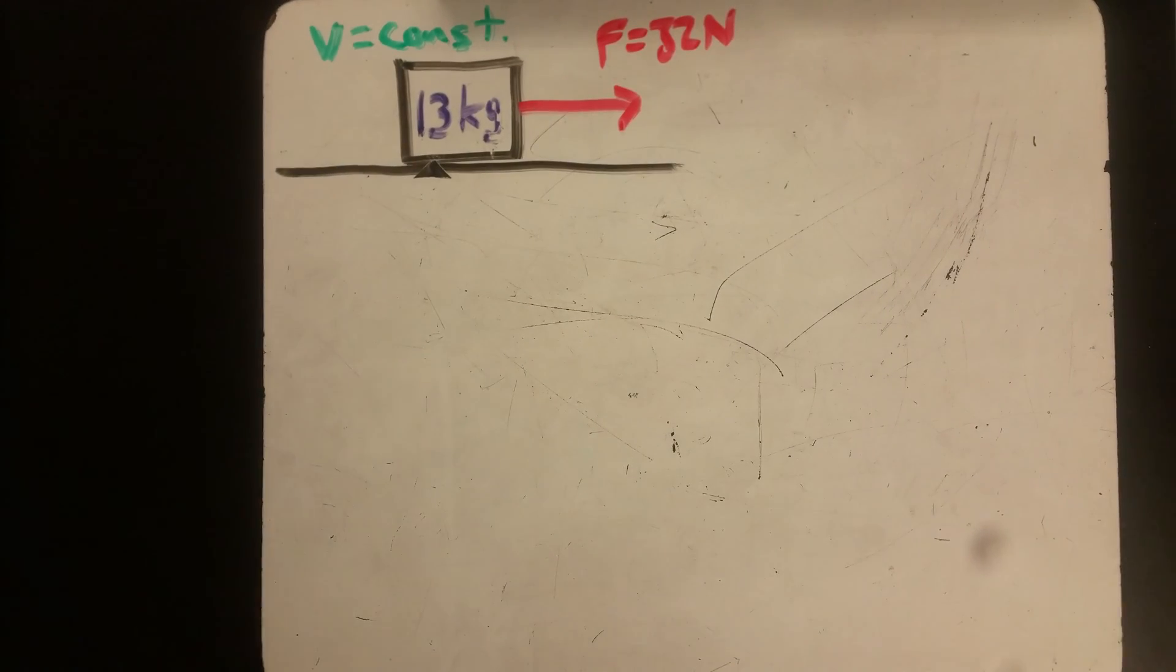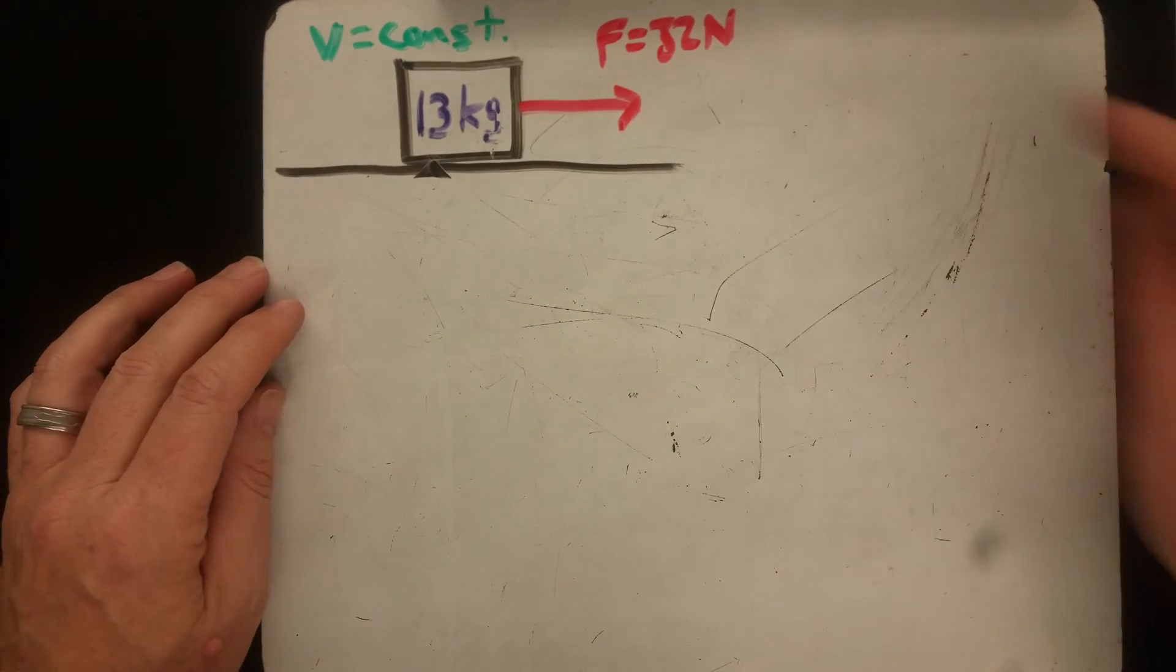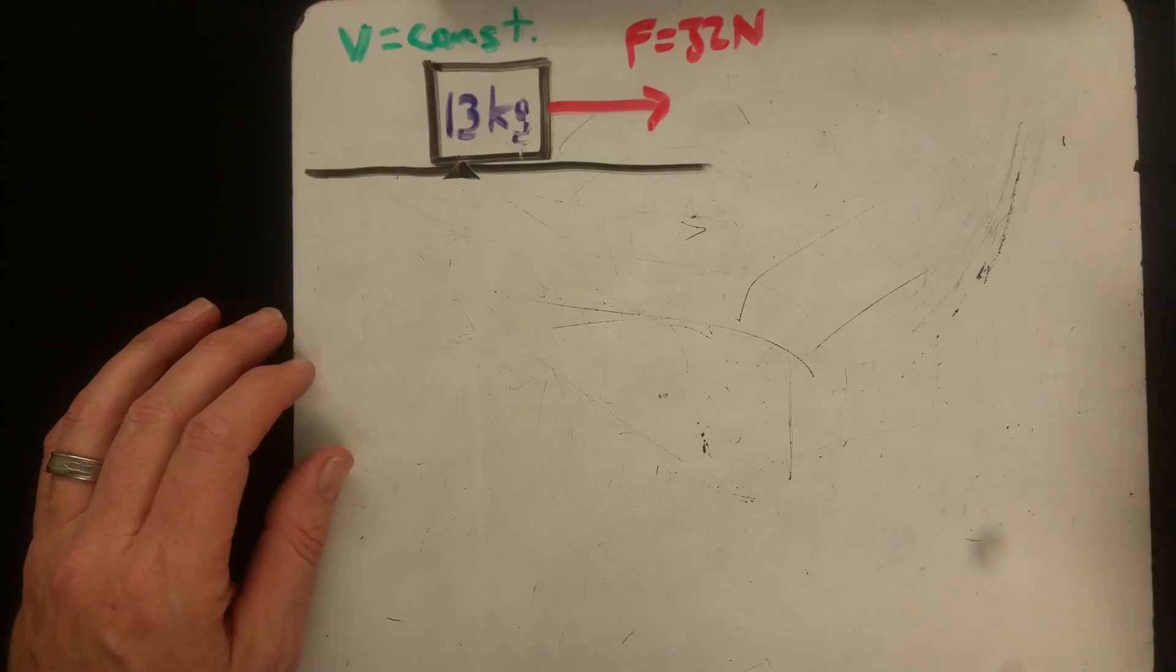This problem presents us with a block of wood being dragged across a horizontal floor with an applied force of 32 newtons, and we are told the velocity is constant.